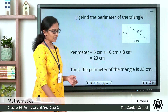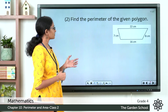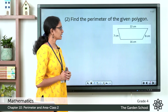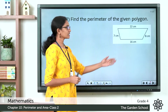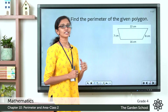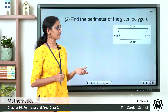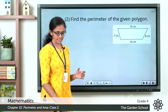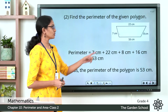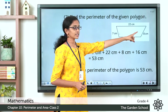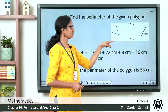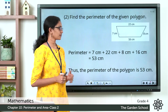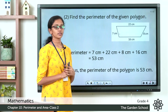I hope that is clear. Now the next example: find the perimeter of the given polygon. You can see a polygon with sides 7 cm, 16 cm, 8 cm, and 22 cm. By definition, the perimeter should be the sum of all these lengths. The perimeter is equal to 7 cm plus 22 cm plus 8 cm plus 16 cm, which is equal to 53 cm. The perimeter of this polygon is 53 cm.